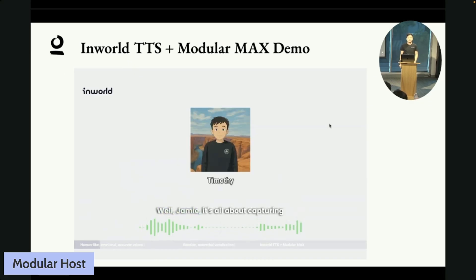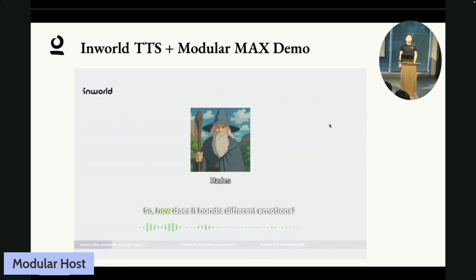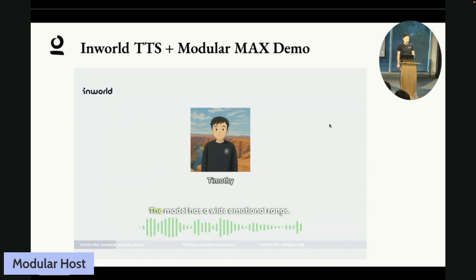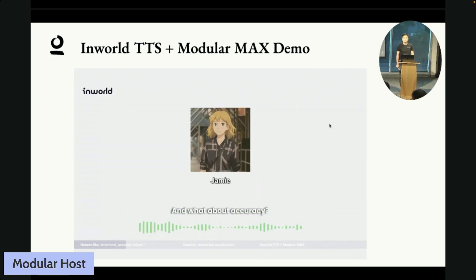It's all about capturing the nuances of human speech. You can really hear the authenticity and warmth. Yeah, totally. It's like you can almost feel the emotion. So how does it handle different emotions? Great question. The model has a wide emotional range. It can express empathy beautifully, like having a conversation with a friend who really gets you. And what about accuracy, especially when it comes to complex stuff like numbers and dates?